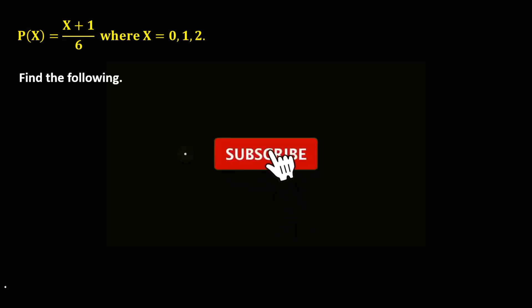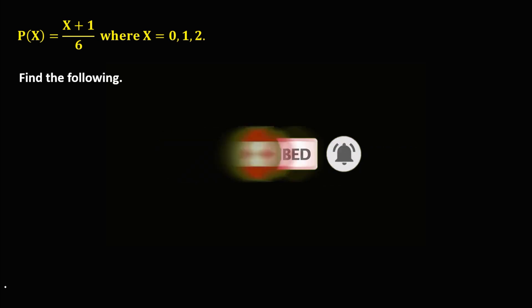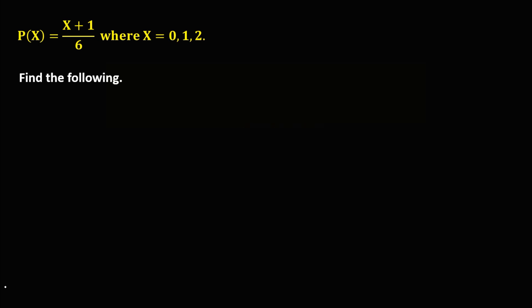Let's solve this problem. Given p(x) equals (x + 1) over 6, where x is equal to 0, 1, and 2, find the following. For p(x) equals 2, from this equation, x is equal to 2.